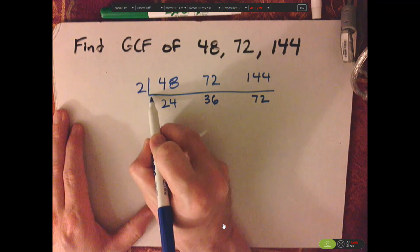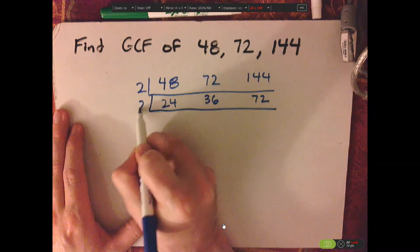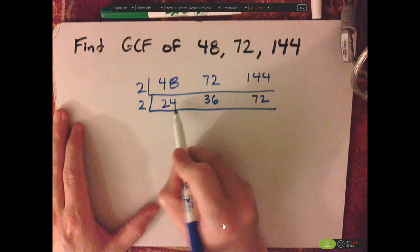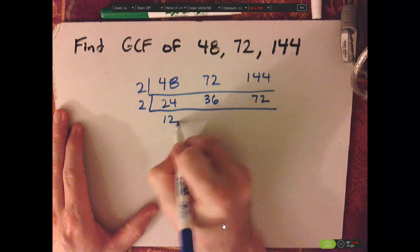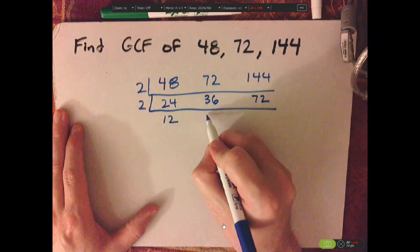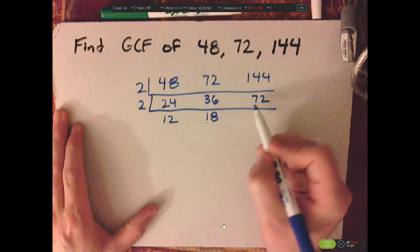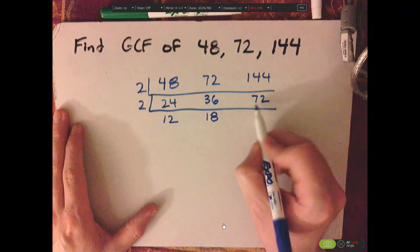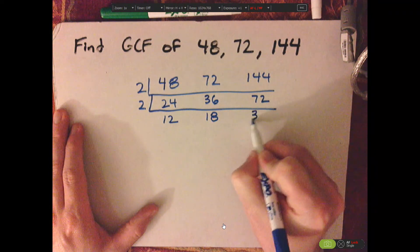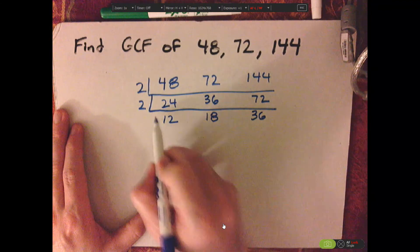I'm going to do two again. So two goes into 24 twelve times, two goes into 36 eighteen times, and then two goes into 72 thirty-six times. They're all even again.